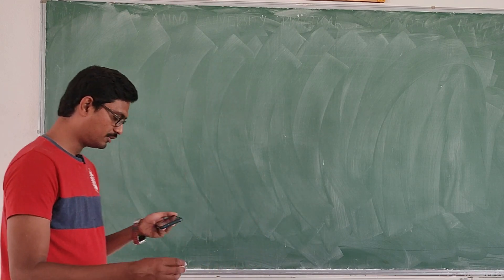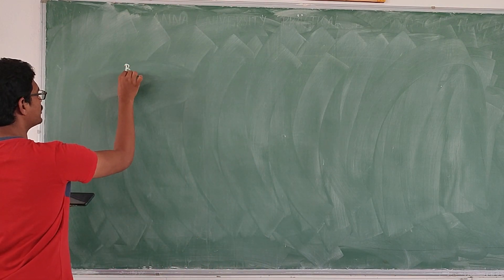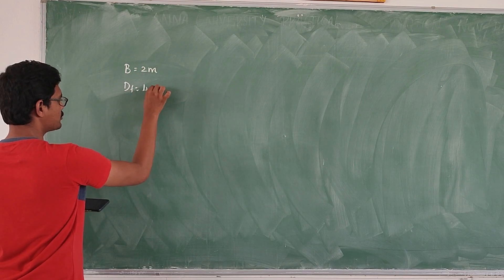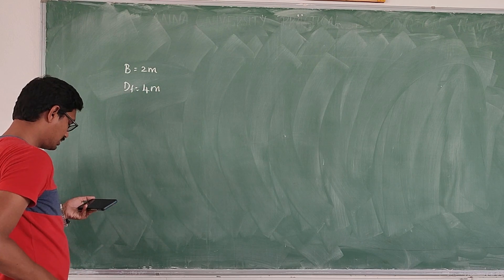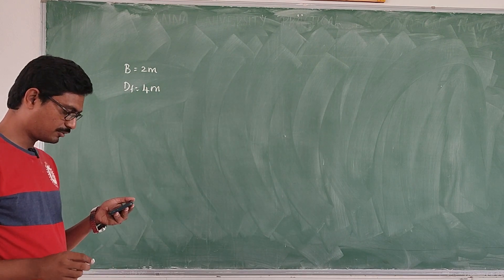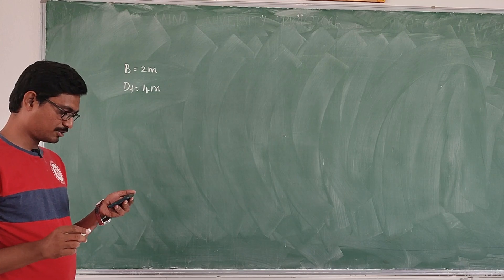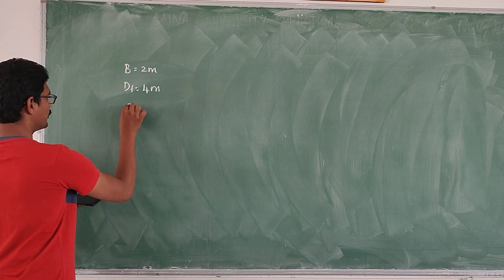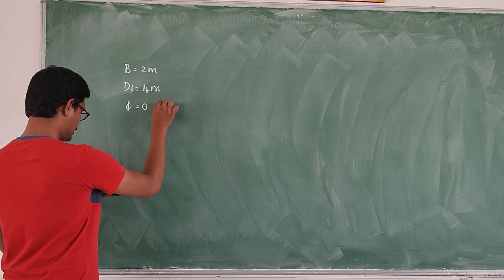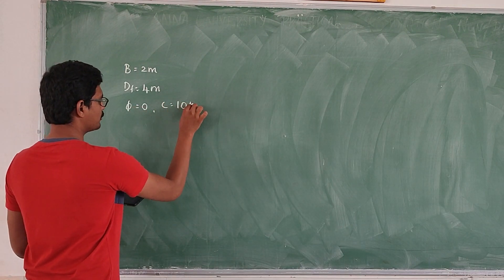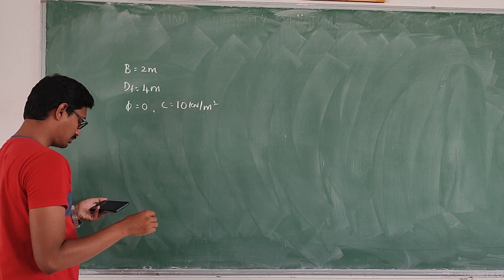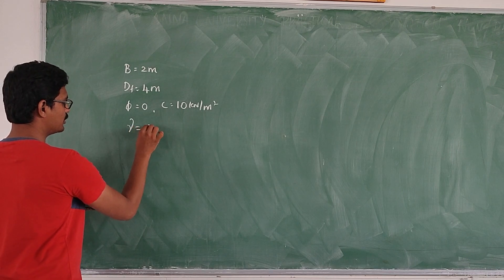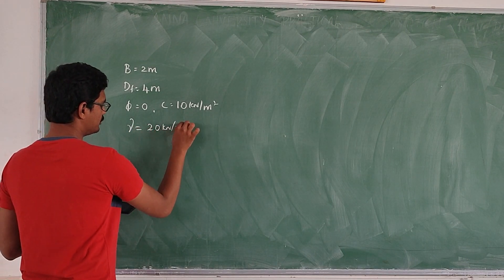So the given values: width B is 2 meter, and depth of foundation Df is 4 meter. The soil is clay, so phi (φ) is equal to 0. Cohesion C is equal to 10 kilonewton per meter square, and unit weight of soil gamma is 20 kilonewton per meter cube.